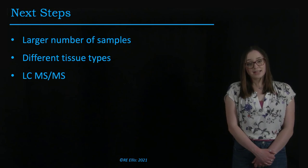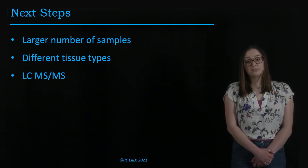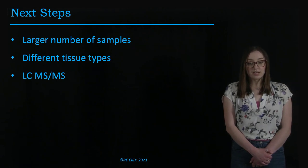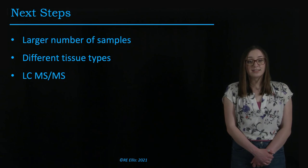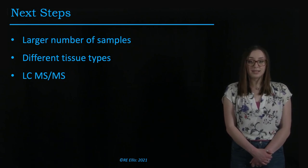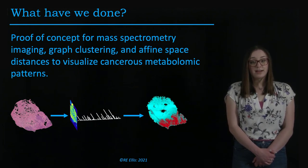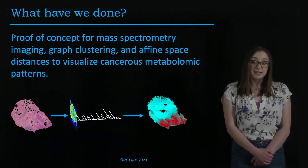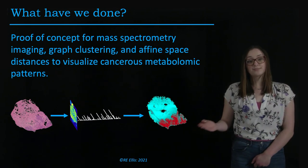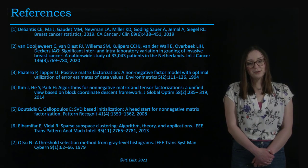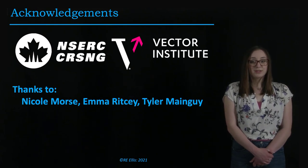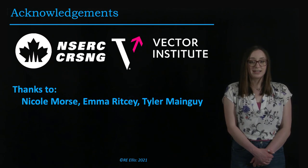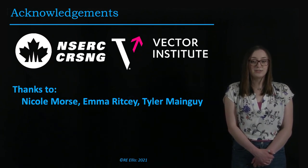Although this work is promising, there are many next steps we would like to take, including a larger number of samples, looking at different tissue types and different cancers, and using LC-MS/MS to get definitive associations between ions and metabolites. Overall, we have provided a proof of concept for the use of mass spectrometry imaging, graph clustering, and affine space distances to visualize cancerous metabolomic patterns. This work was partially funded by the Natural Sciences and Engineering Research Council of Canada and the Vector Scholarship from the Vector Institute of Artificial Intelligence. Special thank you to Nicole Morse, Emma Ritzi, and Tyler Mengai. Thank you for listening.